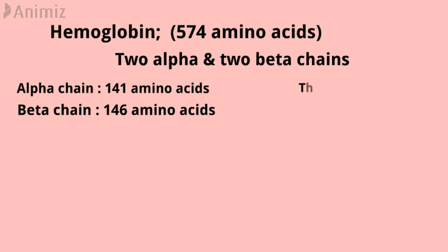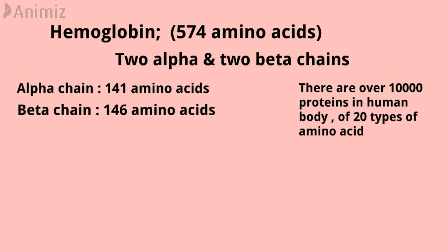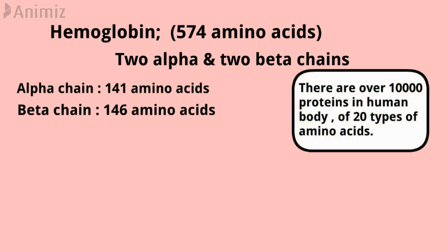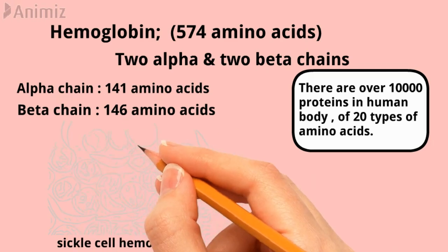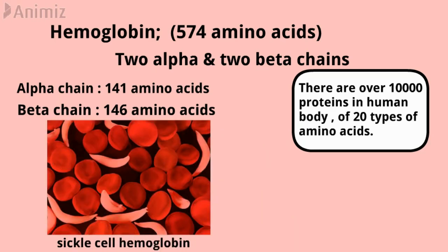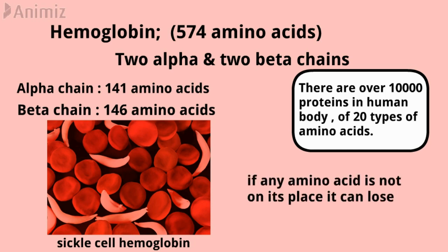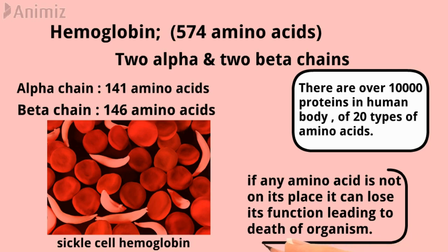There are over 10,000 proteins in the human body, composed of unique and specific arrangements of 20 types of amino acids. The arrangement of amino acids in a protein molecule is highly specific for its proper functioning. The best example is sickle cell hemoglobin: only one amino acid in each beta chain, out of 574 amino acids, does not occupy the normal place in the protein, causing hemoglobin to fail to carry sufficient oxygen, leading to death of the patient.